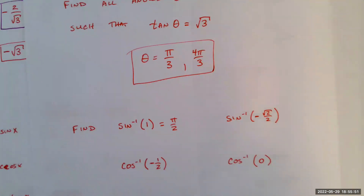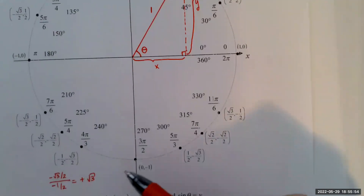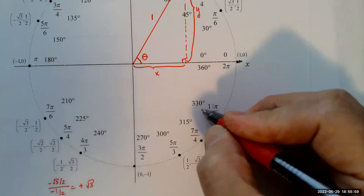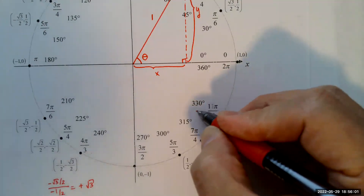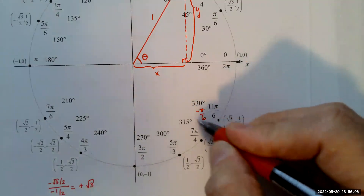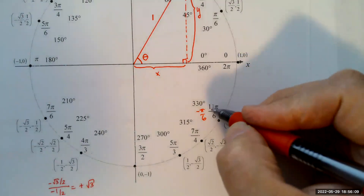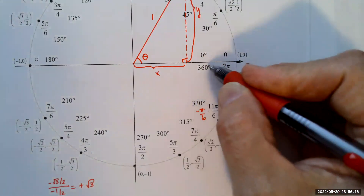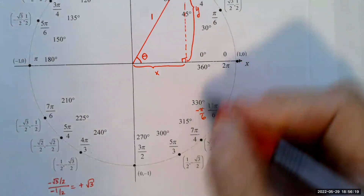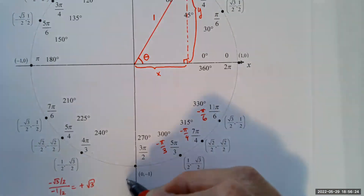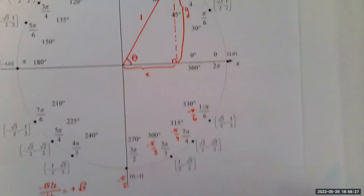For the inverse sine function, we consider values from negative π/2 to π/2. For example, 11π/6 minus 2π equals negative π/6 — we think of clockwise rotations as negative. So this would be negative π/4, negative π/3, and negative π/2 as the corresponding negative angles.